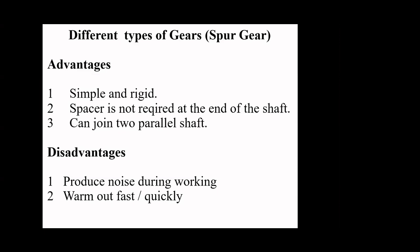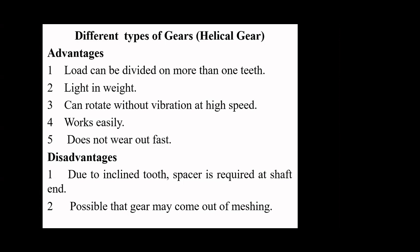So far we have seen the manually operated gearboxes and what types of gears are used. First, the spur gear — the advantages of using spur gear in the gearbox are: spur gears are simple and rigid, require less space to accommodate, and can join two parallel shafts. The disadvantages associated with spur gear are: spur gears produce noise during operation, and they wear out fast.